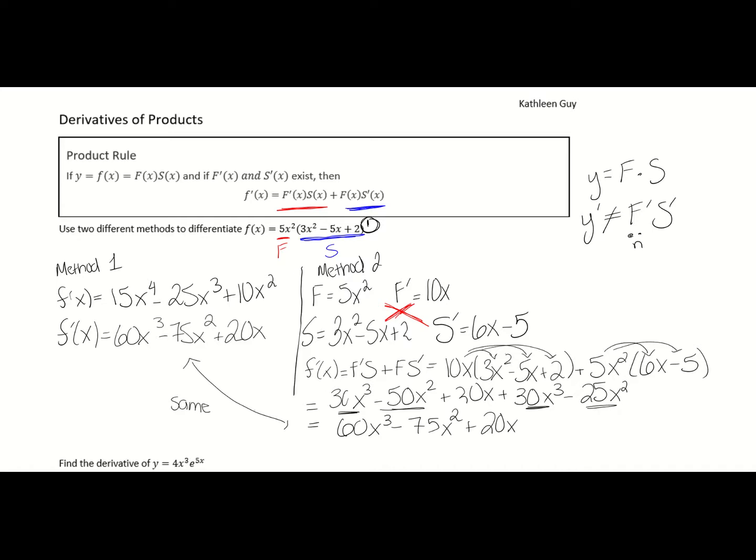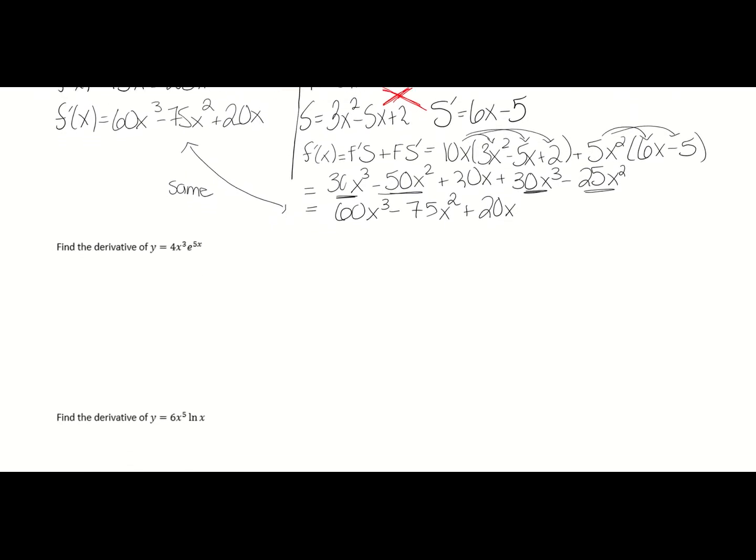In situations like this, I would personally prefer Method 1 — easier because the power is 1 so you can just expand. However, the issue is that you can't always do that, which you'll see in the following problems. So it's good to have the product rule as a backup and get practice with it. Let's look at situations where expanding is not going to be an option — for example, find the derivative of 4x cubed times e to the 5x. There is absolutely no way to combine those two, so the product rule is the only way.